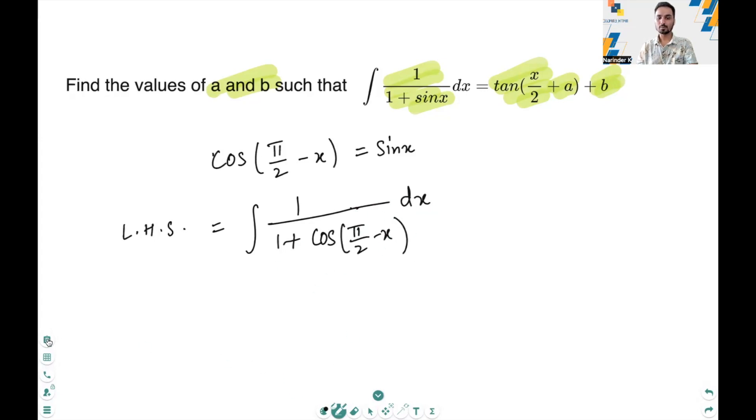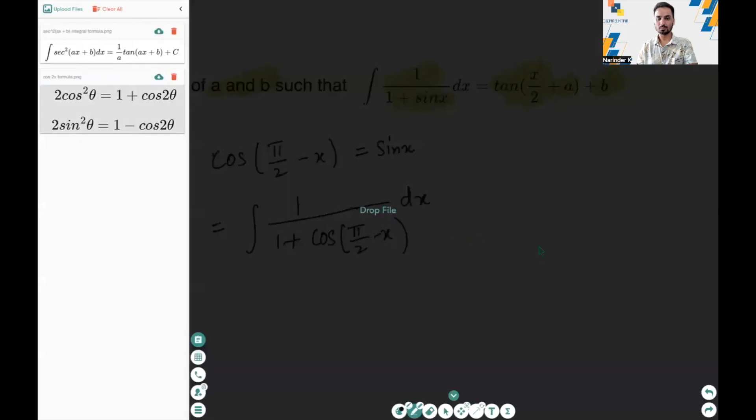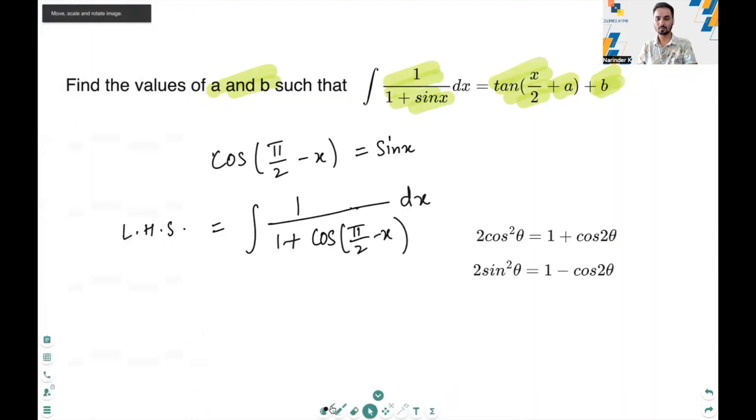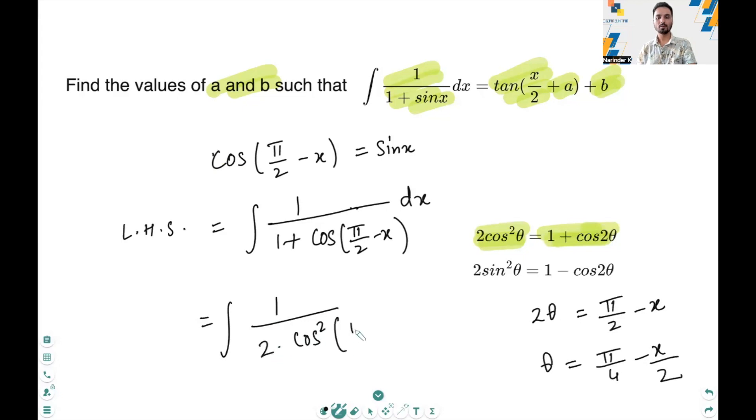Now, in order to simplify it further, we can use one of these identities: 1 plus cos 2 theta equals 2 cos square theta. By replacing 2 theta with pi over 2 minus x, I can get theta which is pi over 4 minus x over 2. So by using this, the denominator here can be written as 1 over 2 cos square pi over 4 minus x over 2 dx.